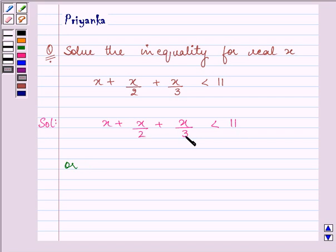So we have 6x plus 3x plus 2x is less than 66.